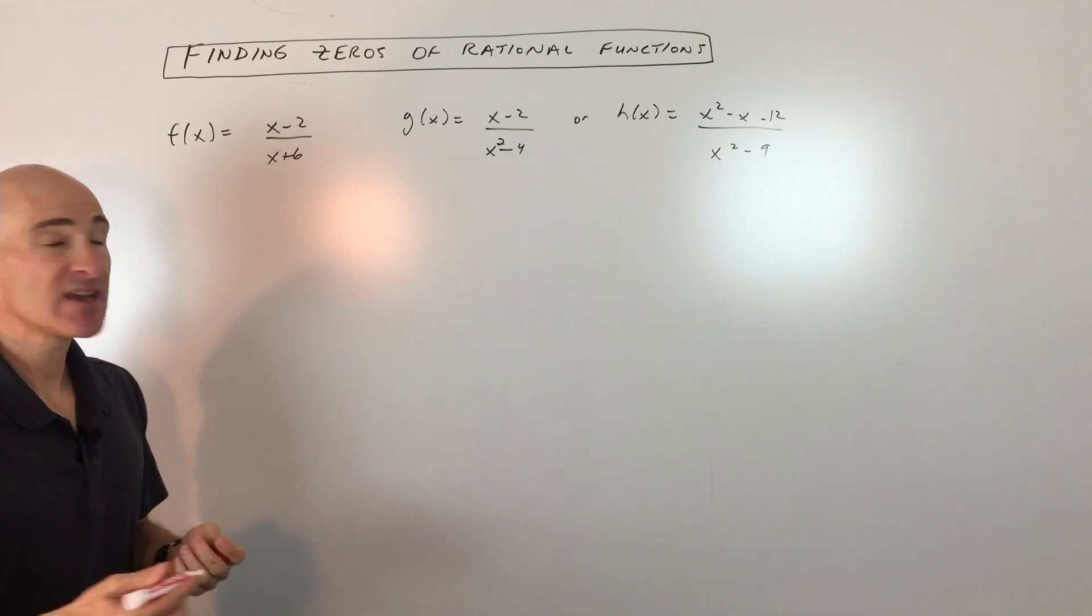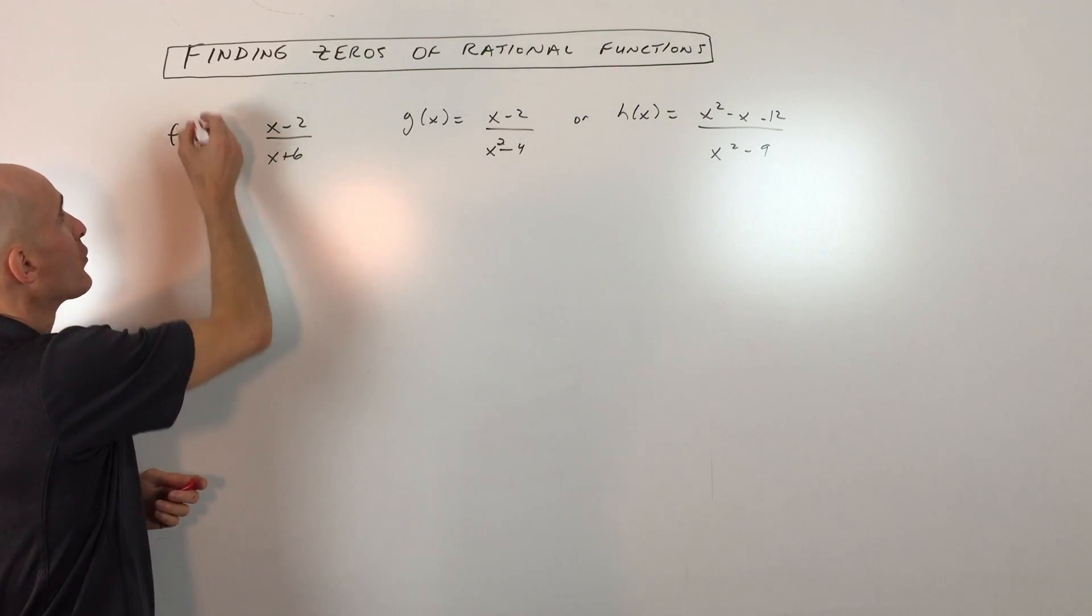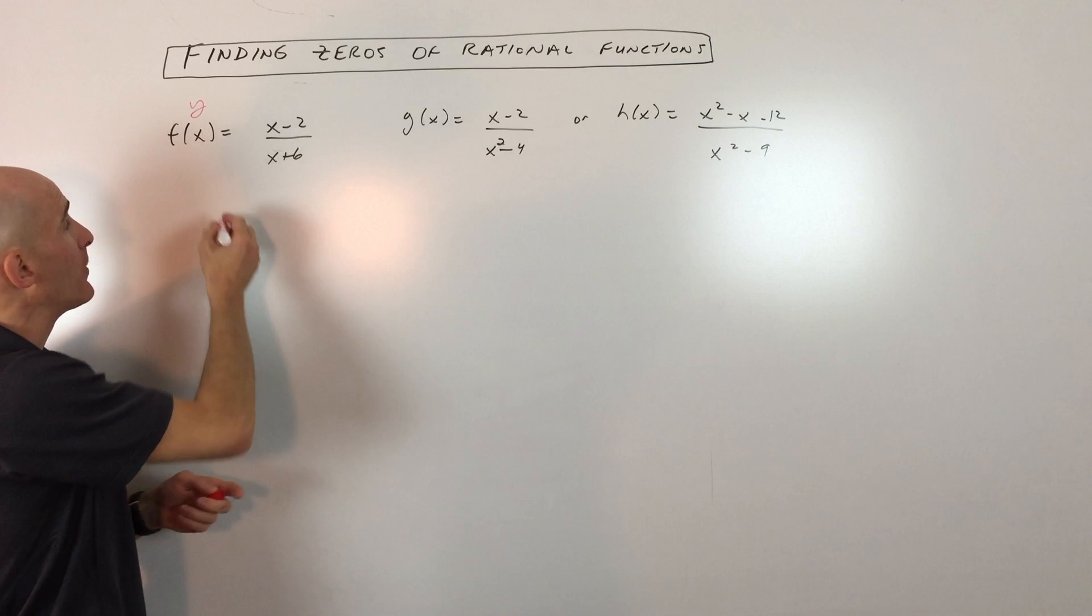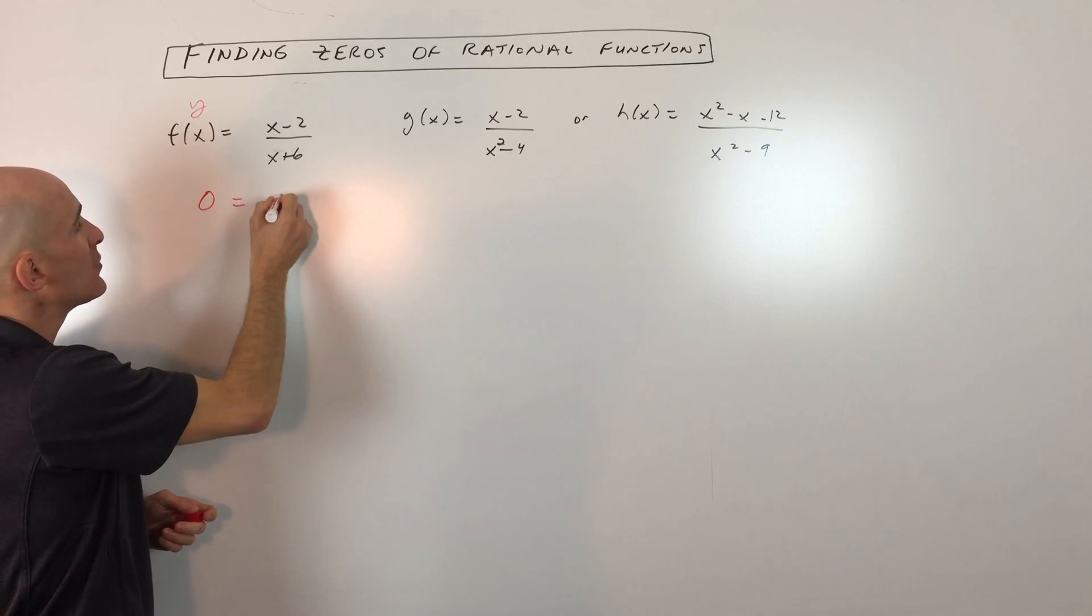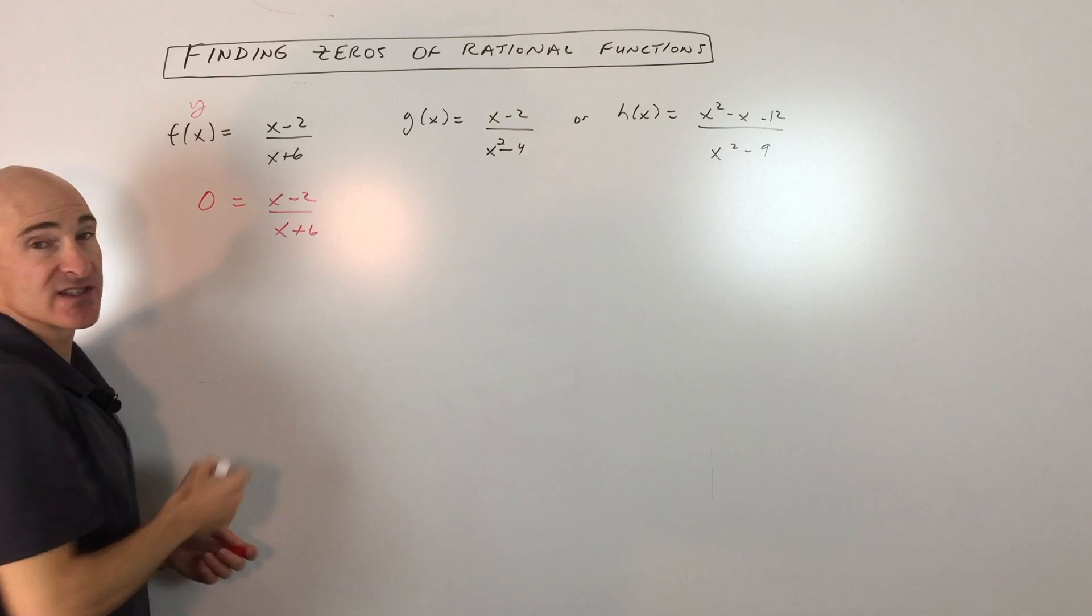When we find the zeros, what that means is we're setting the output, or the y value, equal to zero. So you can see this is zero equals x minus 2 over x plus 6.